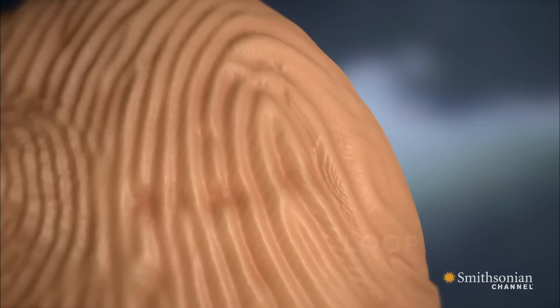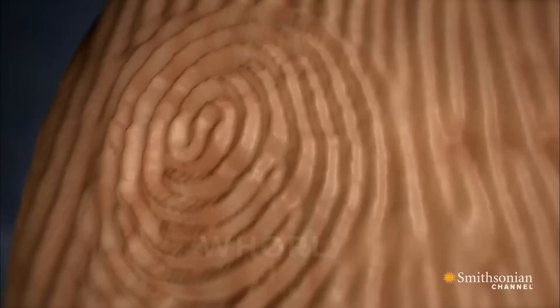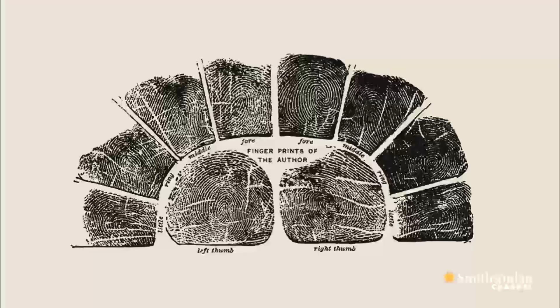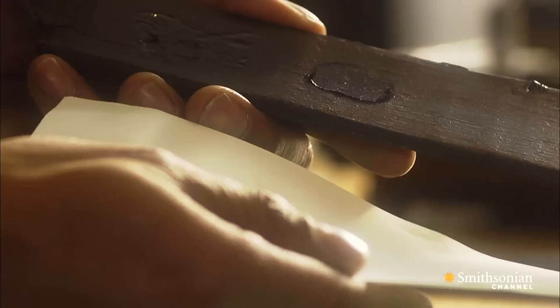Each fingerprint is dominated by one of three primary patterns. The first is an arch, which is like a tent. The second is a loop, like one made with a shoestring. And the third is called a whirl, which looks like a whirlpool. Vucetich proposed using these patterns as a sorting tool. If two prints prove to be different types, there's no need to look any further. But if they're in the same category, then they're worth a closer look.